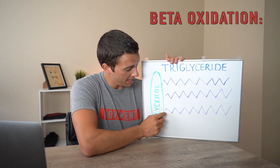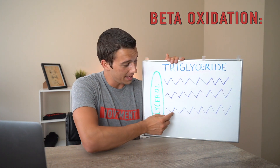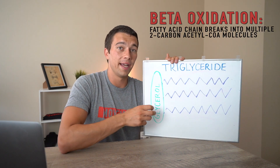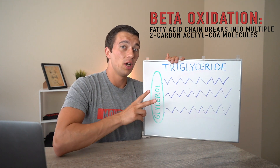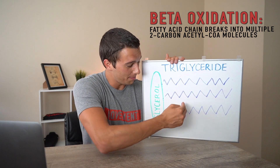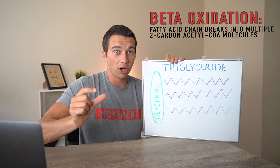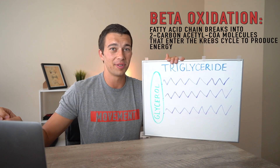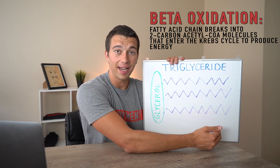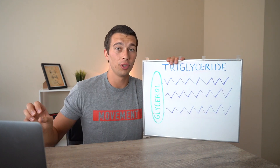Now that we have free fatty acids floating around, coenzyme A can attach to the alpha and beta carbons at the end of that fatty acid chain and break off that two-carbon unit — we call that acetyl CoA. So just like cutting sushi, we're taking a long 20 or 22-carbon chain and cutting it into little two-carbon acetyl CoA molecules that can then go to the Krebs cycle. That process is beta-oxidation.